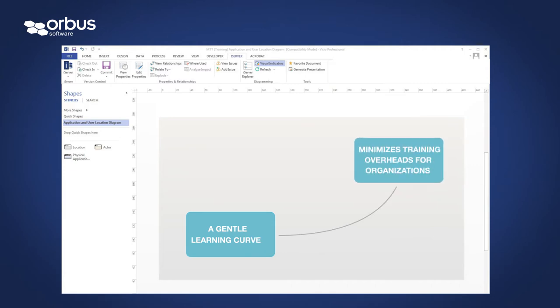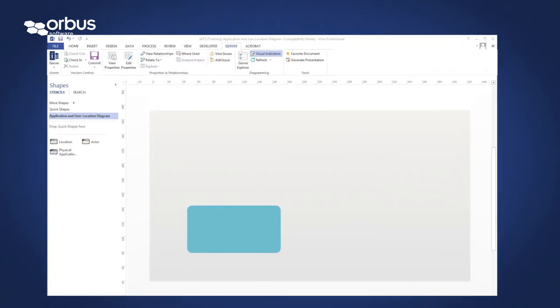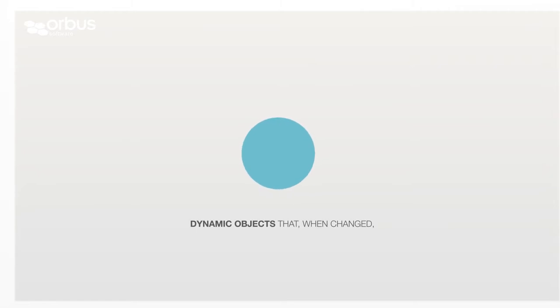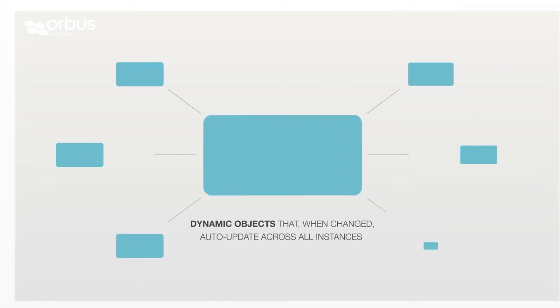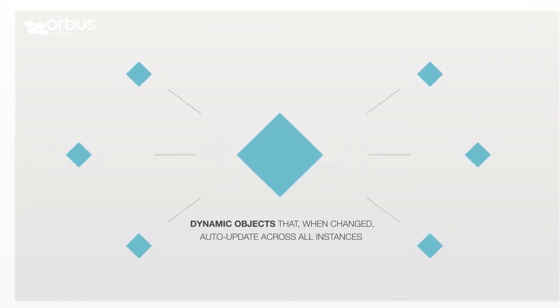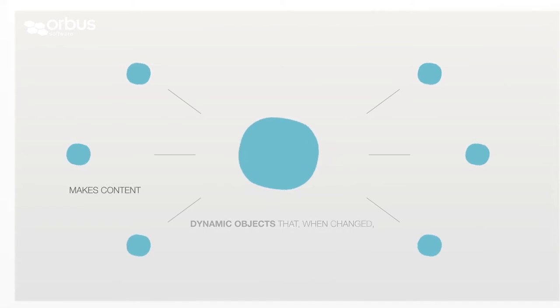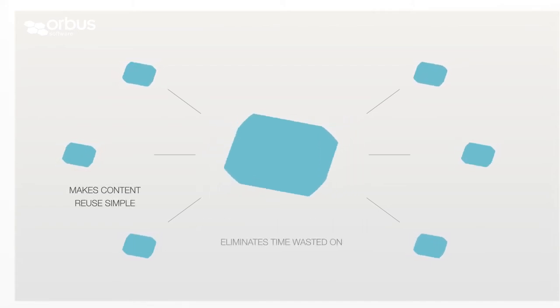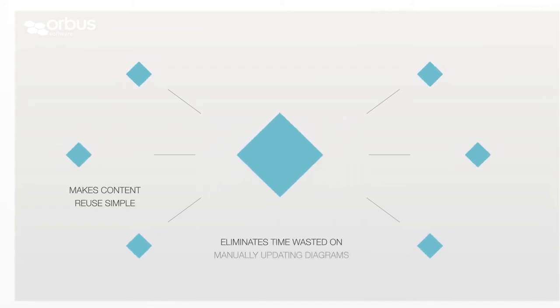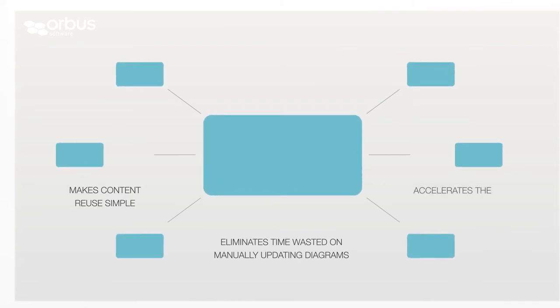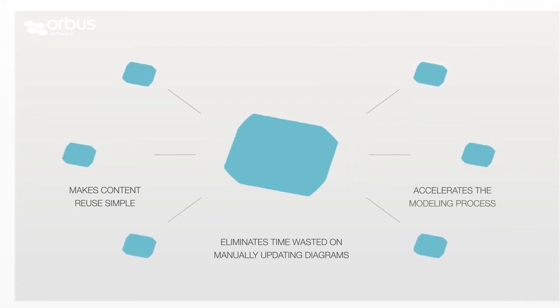How does it work? Simply put, Visio diagrams and artifacts are transformed into dynamic objects that, when changed, auto-update across all existing instances of your repository. This makes content reuse simple and eliminates time wasted on manually updating diagrams and accelerates the modeling process.